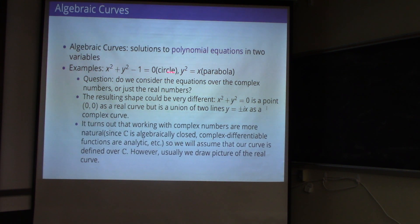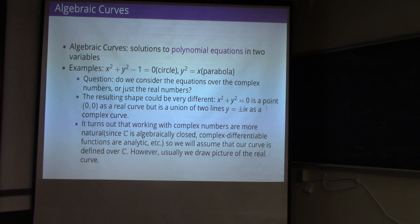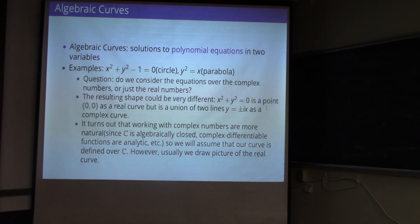We're talking about polynomial equations, and we know that there are real solutions and complex solutions. The question is: do we consider all the complex solutions, or just the real numbers? This makes a crucial difference. For example, if we look at x² + y² = 0, the solution set if we only allow real numbers is just the origin. But if you look at the complex solution, then it's the union of two lines, y = ±ix — that's a complex line, a real plane.